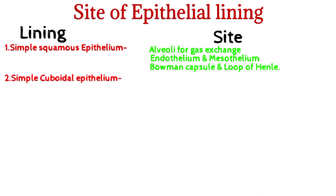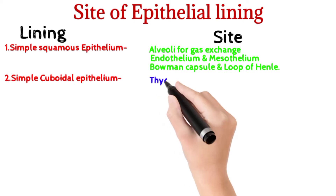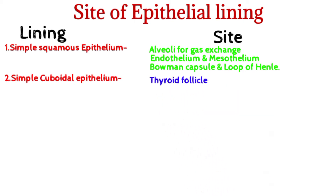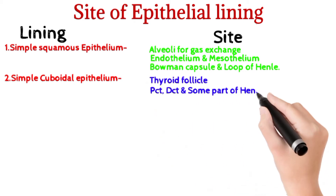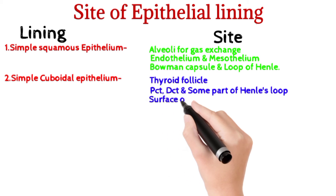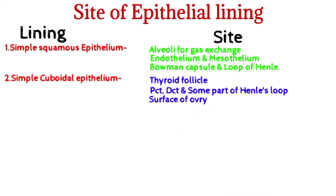Simple cuboidal epithelium is present in the thyroid follicle, PCT, DCT, some parts of the loop of Henle, and the surface of the ovary. Its functions are secretion, absorption, and surface barrier.